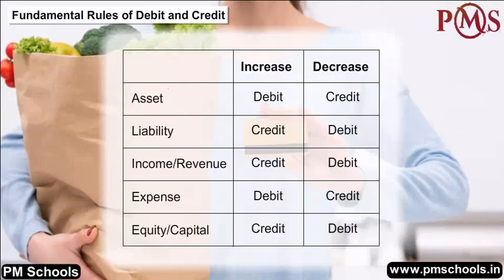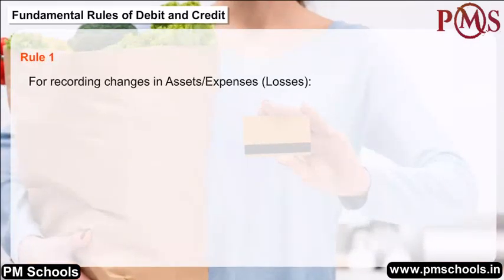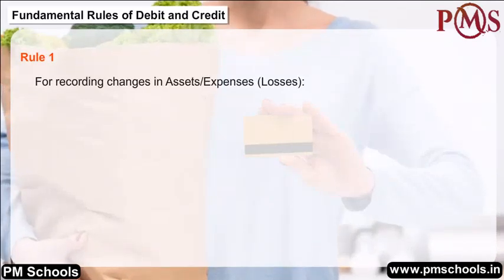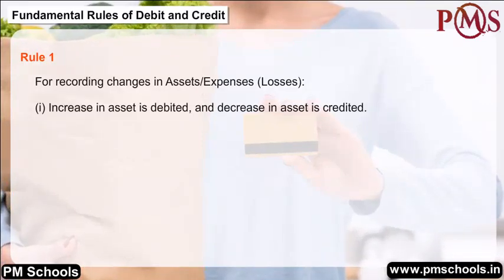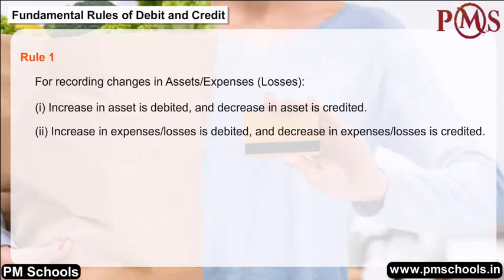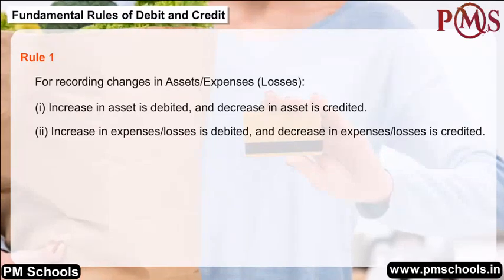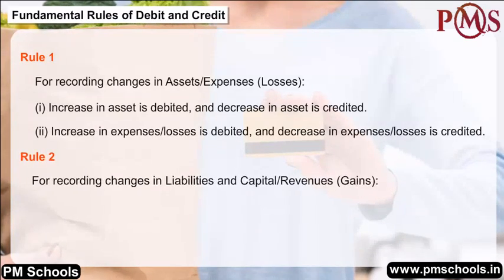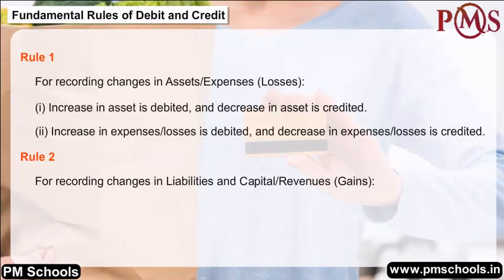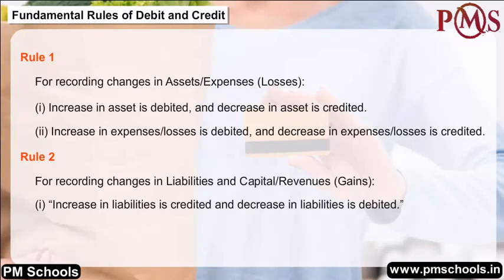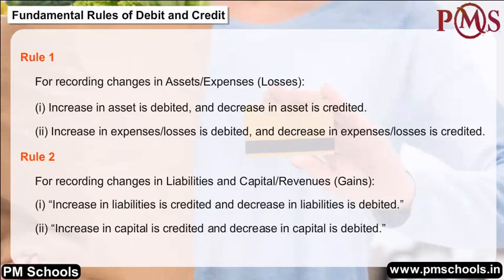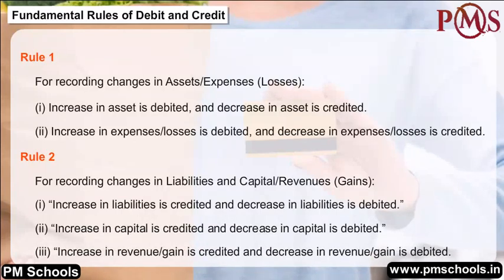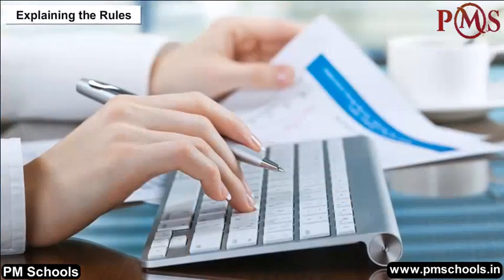Fundamental Rules of Debit and Credit — Rule 1: For assets and expenses or losses: an increase in assets is debited and a decrease is credited; an increase in expenses or losses is debited and a decrease is credited. Rule 2: For liabilities, capital, and revenues or gains: an increase in liabilities is credited and a decrease is debited; an increase in capital is credited and a decrease is debited; an increase in revenue or gain is credited and a decrease is debited.